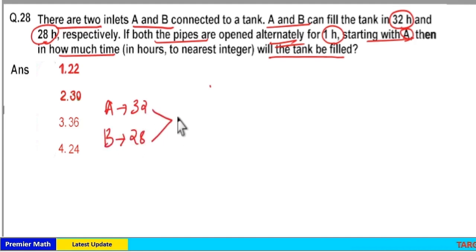Both are doing the same work. Take the LCM. 8 into 4 is 32 and 7 into 4 is 28. So 8 into 4 into 7 is the LCM. 32 goes 7 times in LCM. 28 goes 8 times in LCM.